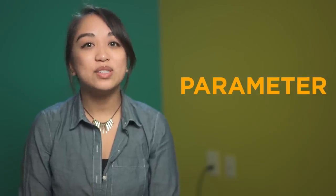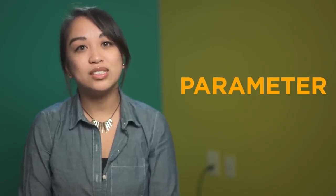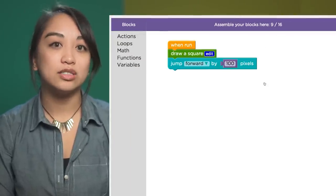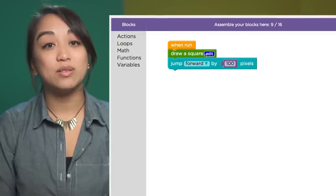Parameters allow us to pass values into a function that get used as variables inside the function. Let's try adding a parameter called length to this function, so we can use it to create squares of different sizes.